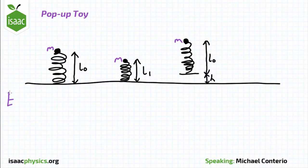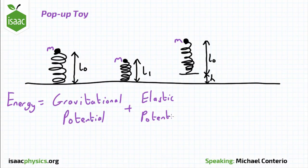We have to conserve energy between these three situations. We have to look at the gravitational potential energy, the elastic potential energy, and the kinetic energy, and sum those to get the total energy of the situation.